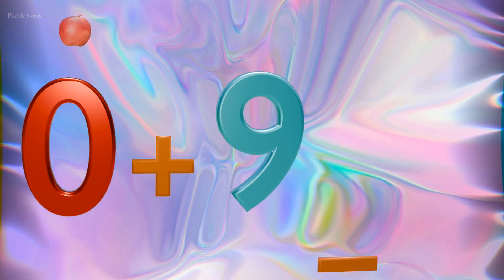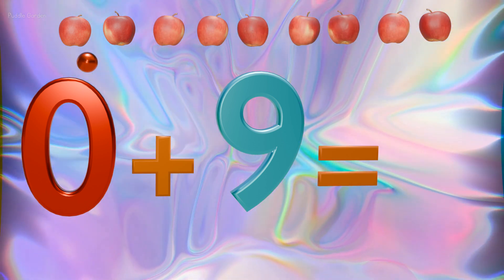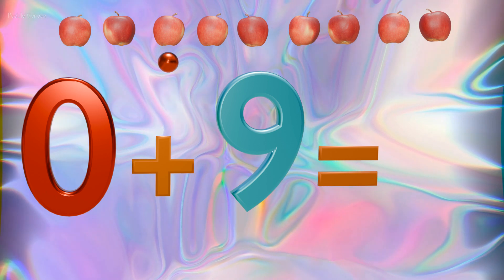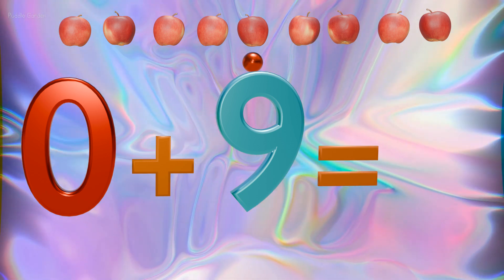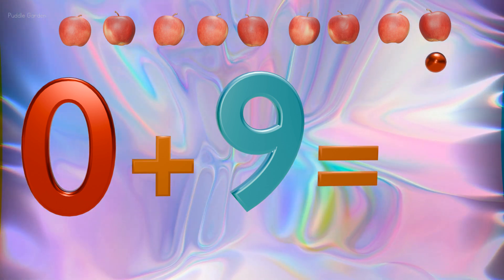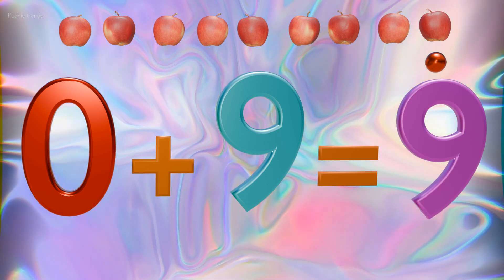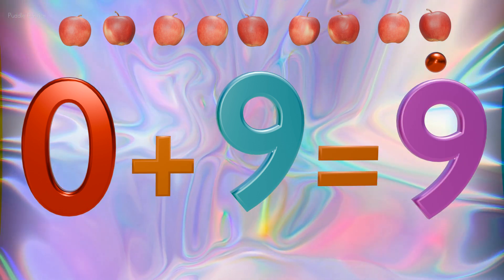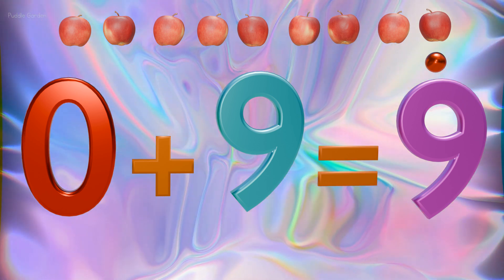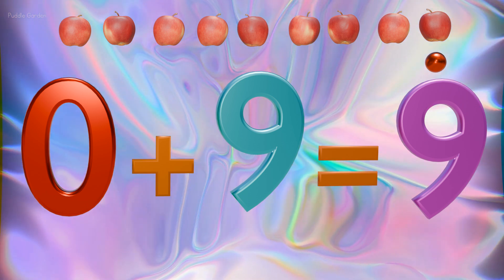0 plus 9 equals 1, 2, 3, 4, 5, 6, 7, 8, and 9. 0 plus 9 equals 9 because we started with 0. We started with nothing and then we added 9 more. So 0 plus 9 equals 9 all together.